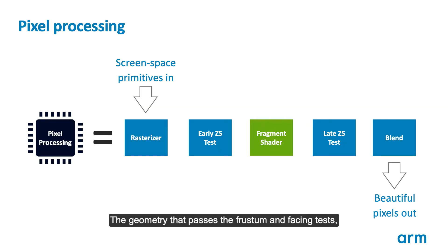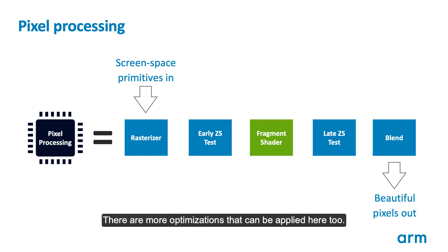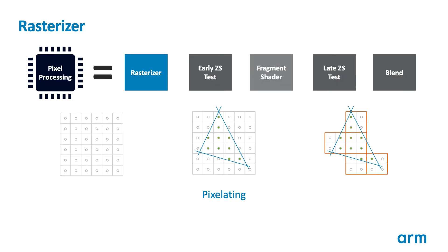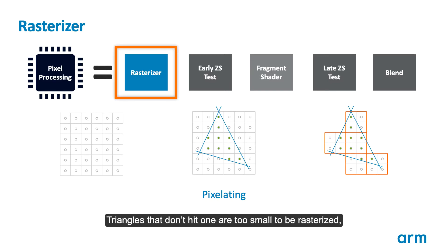The geometry that passes the frustum and facing tests goes through to pixel processing, where the GPU colours in the pixels to produce the final on-screen output. There are more optimizations that can be applied here too. Triangles have to hit at least one rasterization sample point to be considered visible; triangles that don't are too small to be rasterized and can be discarded.